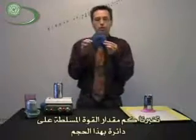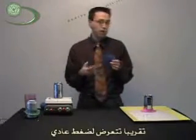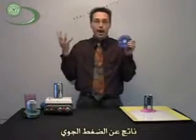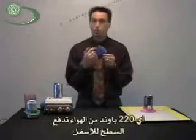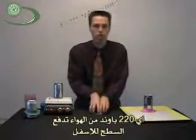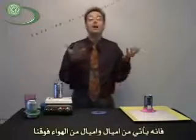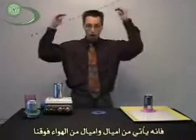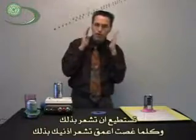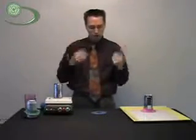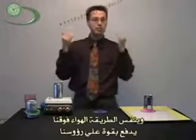If we look at the circle, at standard pressure, the atmosphere exerts about 220 pounds of force on a circle this size — 220 pounds of air pushing down. Where does that pressure come from? We've got miles and miles of air over our heads, and it's all sitting down on us. Just like when you dive into a deep part of a swimming pool and your ears feel the pressure of the water, all the air over our heads is pushing down on us.